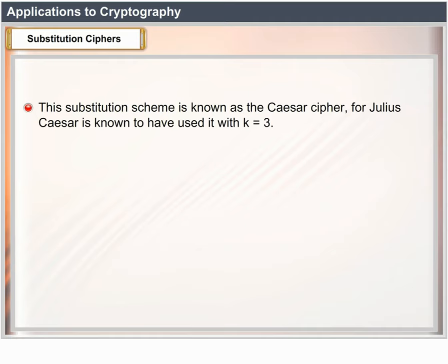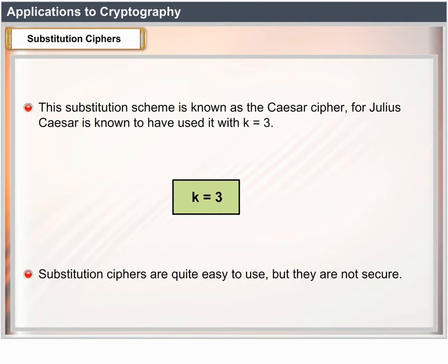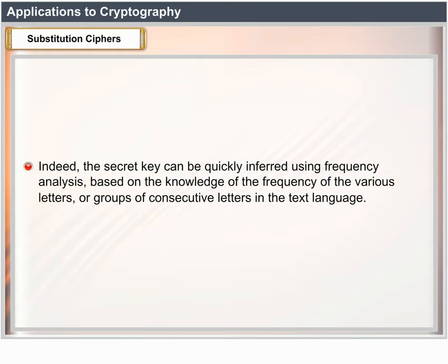This substitution scheme is known as the Caesar cipher, for Julius Caesar is known to have used it with K = 3. Substitution ciphers are quite easy to use, but they are not secure. The secret key can be quickly inferred using frequency analysis based on the knowledge of the frequency of various letters or groups of consecutive letters in the text language.